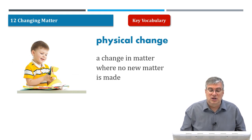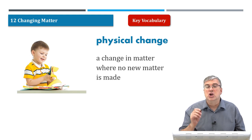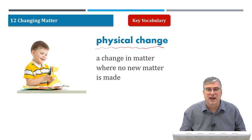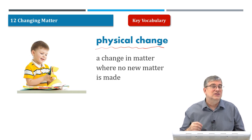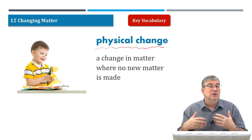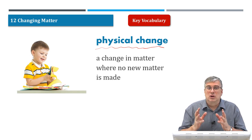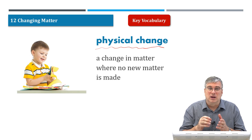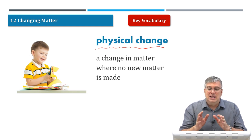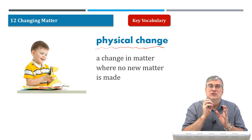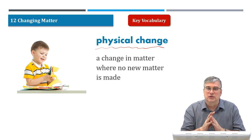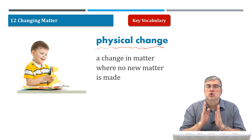A physical change is a change in matter where no new matter is made. When you mix sugar into tea or you mix salt into water, no new matter is being made — you're not making any new type of substance. The original matter is still there. The sugar is in your tea; you just can't see it, but you can taste it. There's no new matter made, but it's been changed from a solid into a liquid. So it's a physical change — a change in matter where no new matter is made.